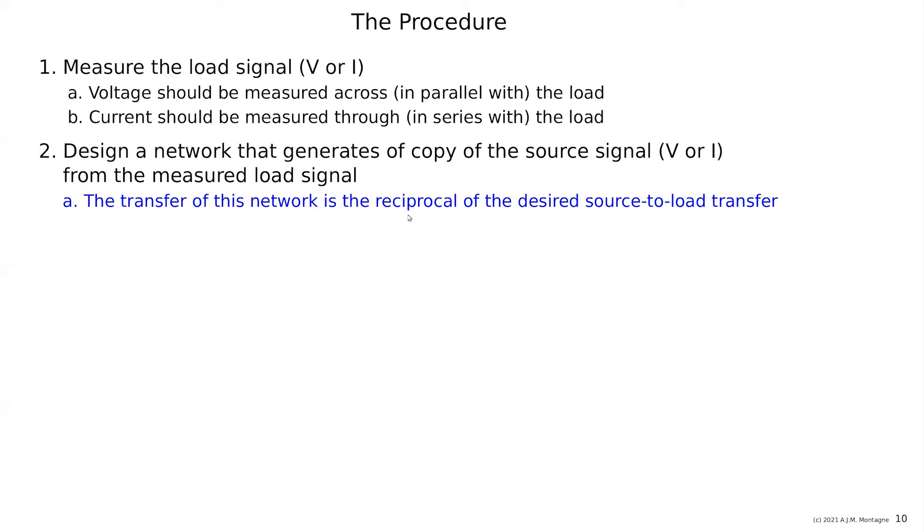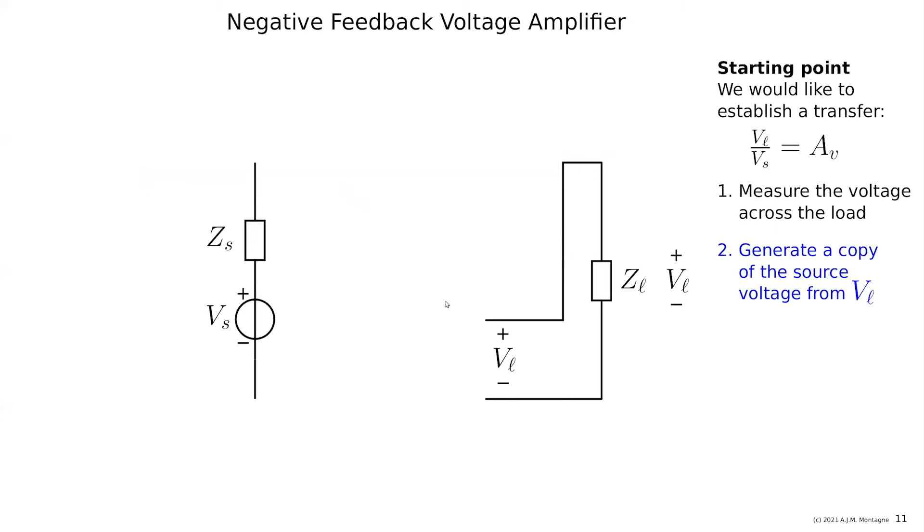So it's the other way around from going from source to load, so the transfer of this network is the reciprocal of the desired source load transfer. Let's do it. So we put some block there, and later on I will show you examples of what this block can be, but let's give this block a voltage gain of one over the desired voltage gain of our feedback amplifier. And that provides me a copy of VS. So if the load voltage would be correct, then it means that the copy there is exactly the same as the source.